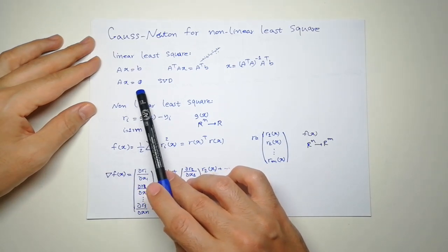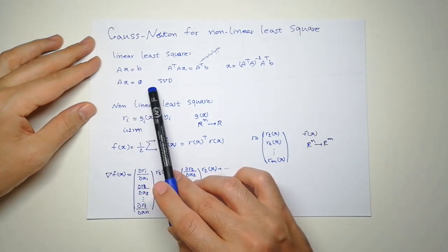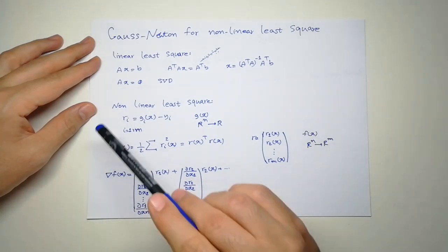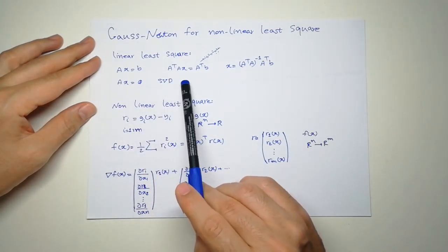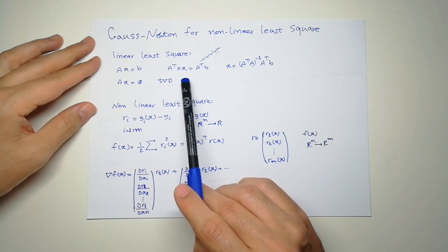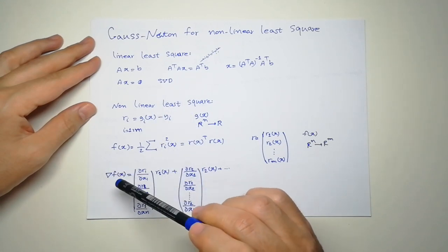If the other side is 0, we cannot do that. So we compute the SVD of matrix A, and the last columns of V transpose, the last matrix in the SVD decomposition,